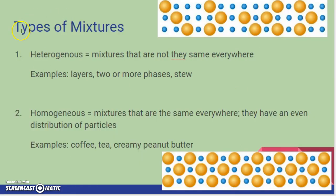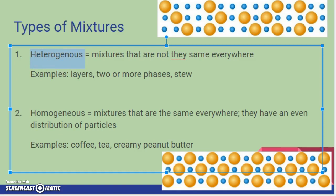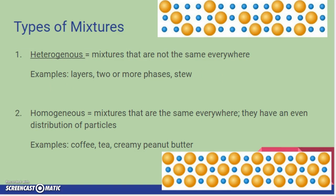All right, so there's two types of mixtures. Please write down everything that's on this slide. So hit pause until you have it down. So our first type of mixture is heterogeneous and hetero means different. So looking at word parts really helps. Hetero means different. So mixtures that are not the same everywhere. So examples something that has layers, if it has two or more phases, or the stew that you might have for supper.